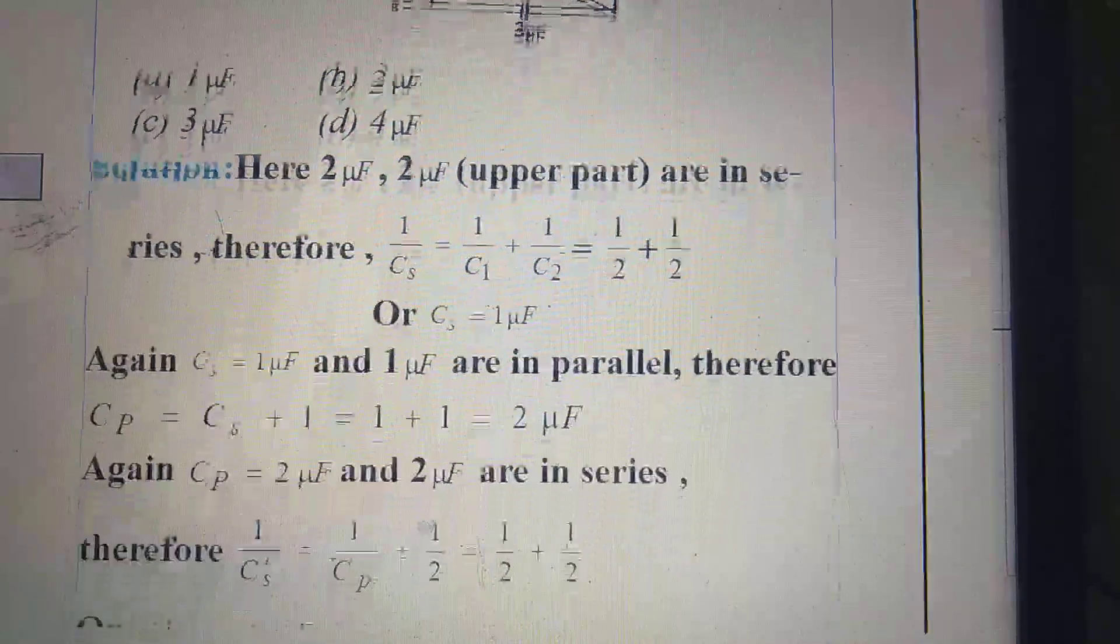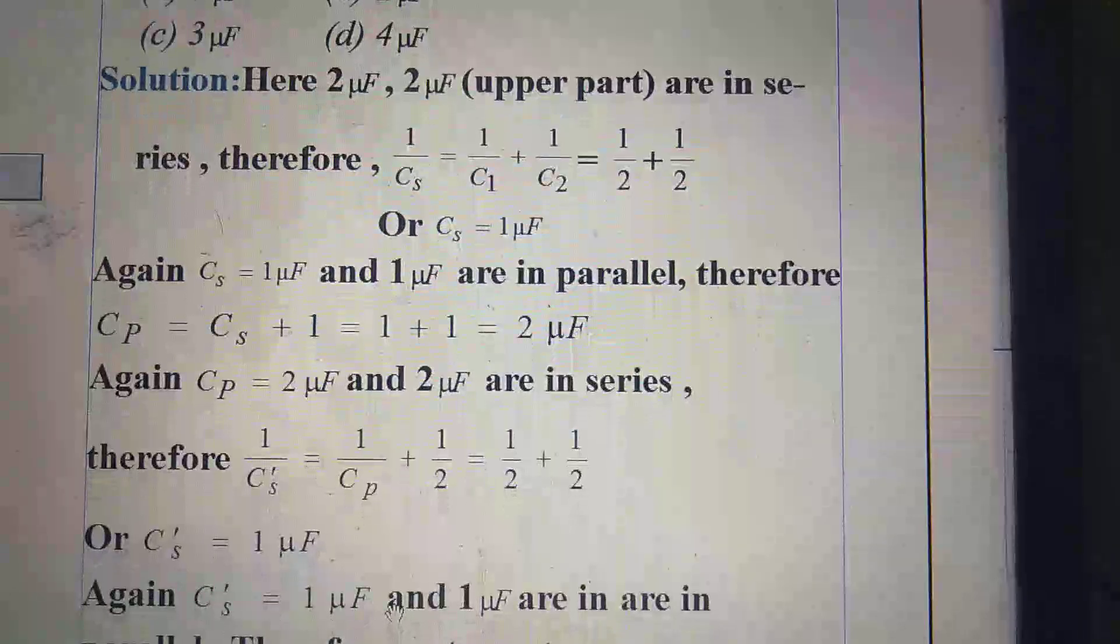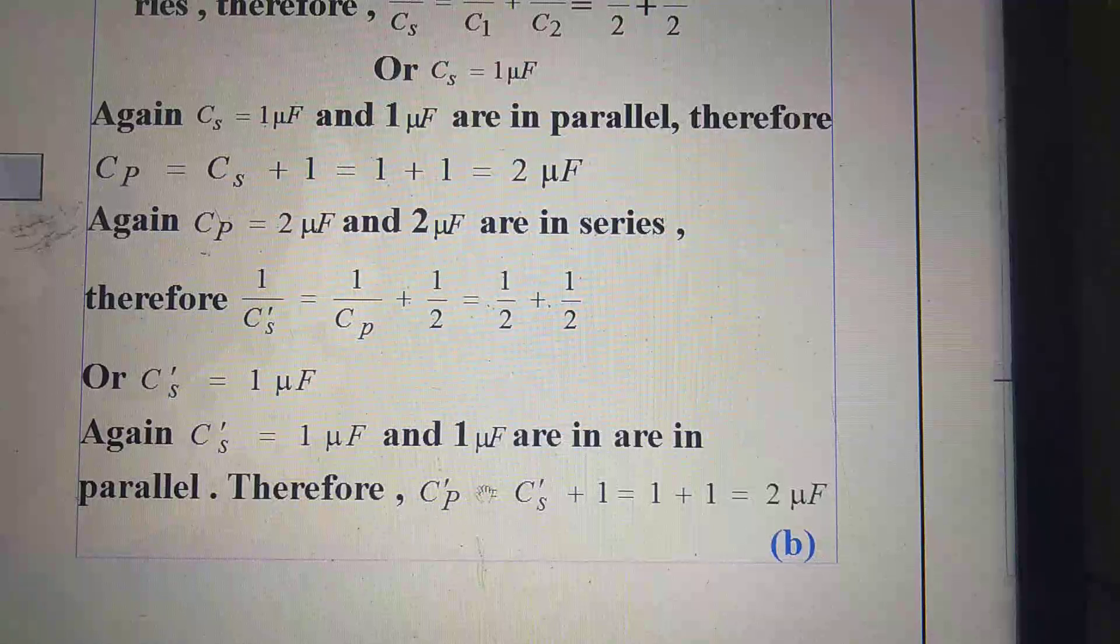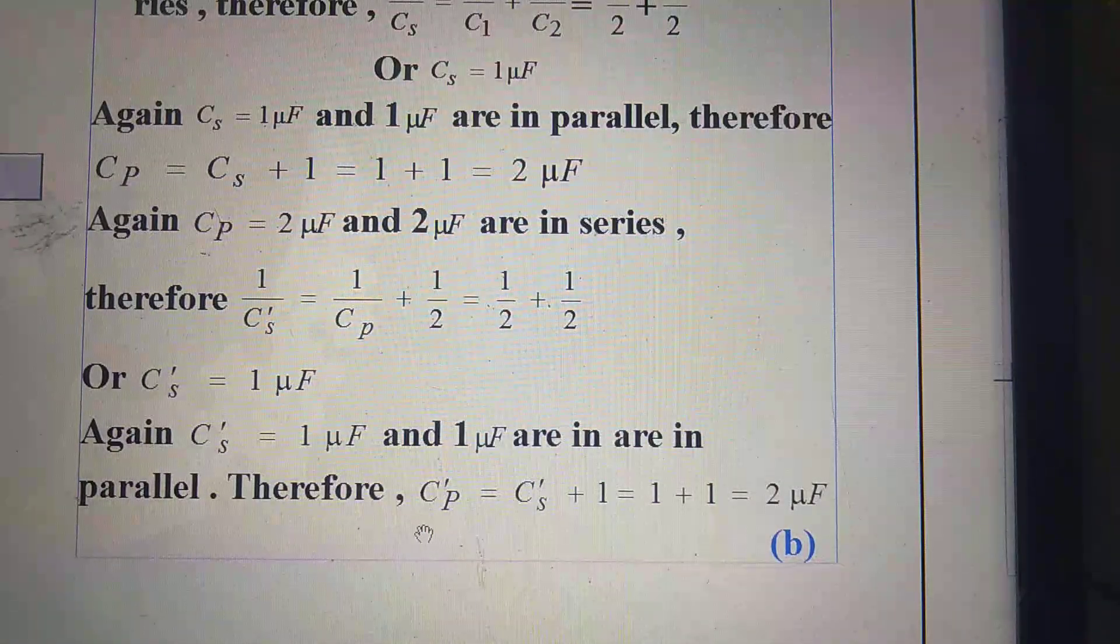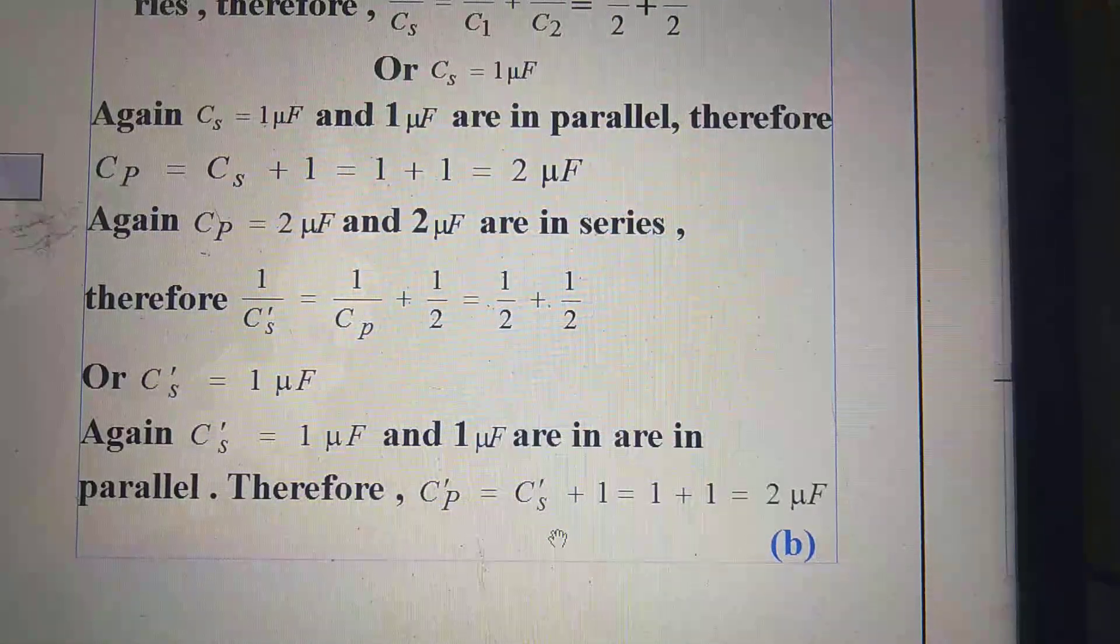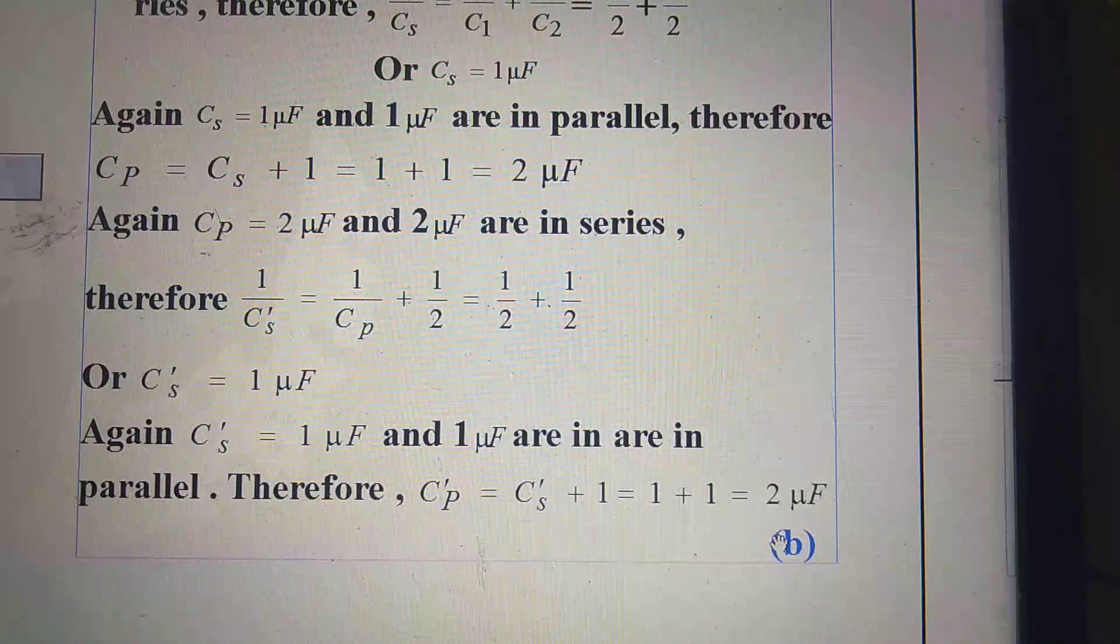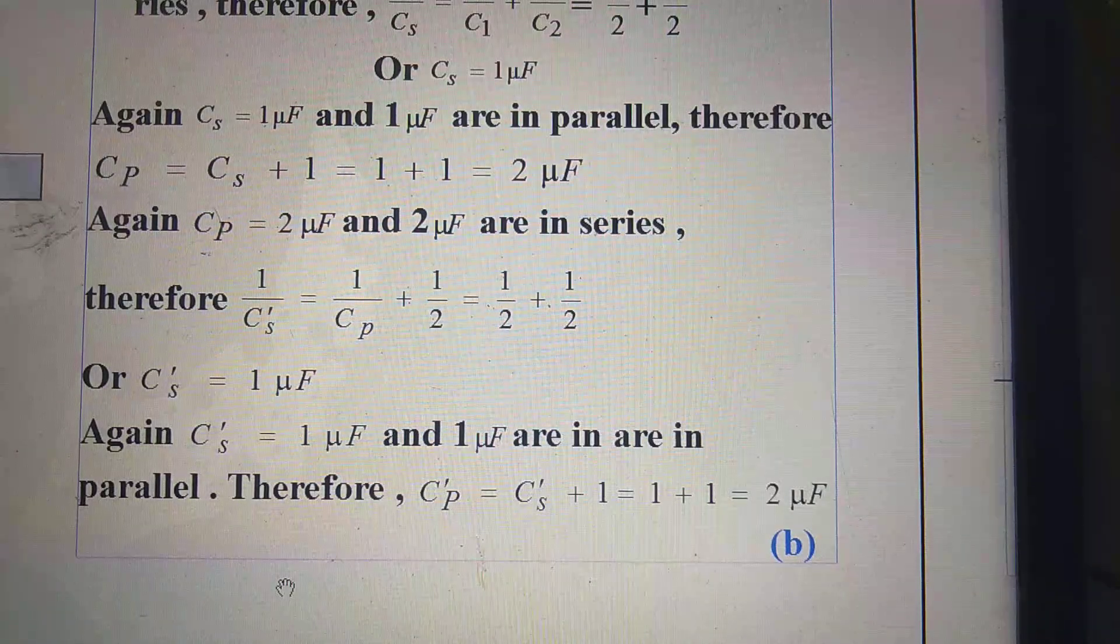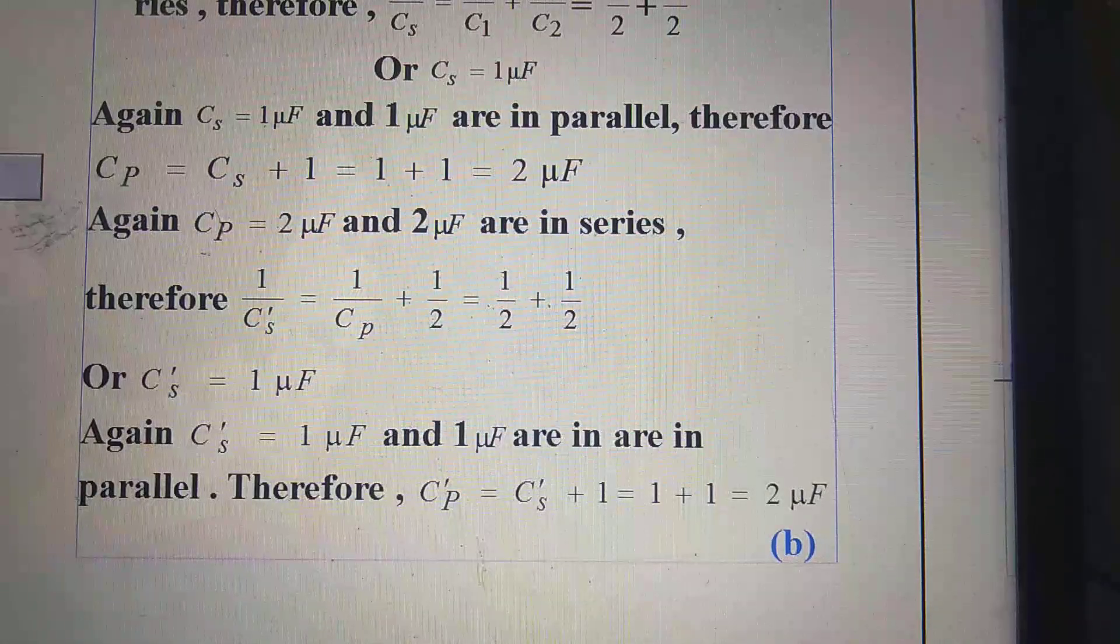Again, Cp dash equal to 1 microfarad and 1 microfarad are in parallel. Therefore, Cp dash equal to 1 plus 1 plus 1 equal to 2 microfarad. That is, resultant capacitance in between A and B is 2 microfarad. The right option is B.